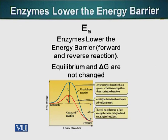Once the substrate has fit in the enzyme and the substrate and enzyme have bonded, the enzyme will lower the activation energy barrier. We can see in the graph that without enzyme, the blue hump is much higher. If you use enzyme as a catalyst, the activation energy requirement of the reaction lowers. So the red hump is much shorter — much smaller than the blue hump. Enzymes have basically lowered the activation energy requirement.